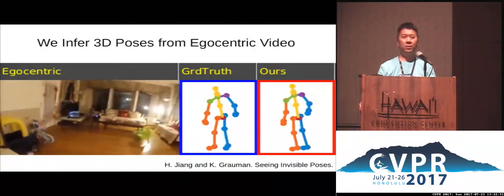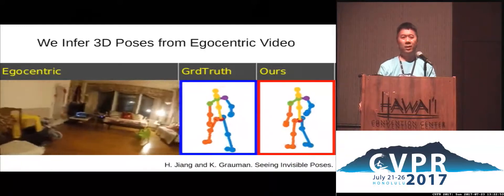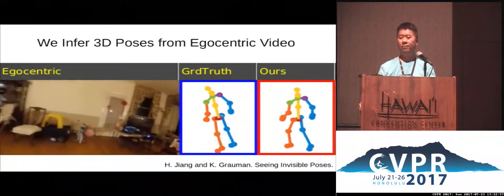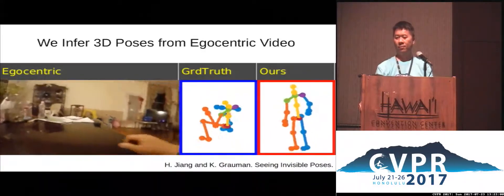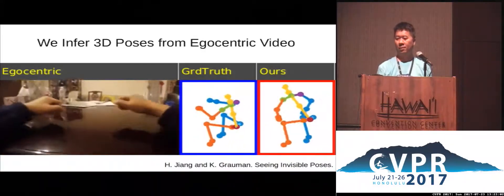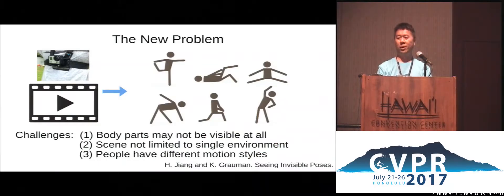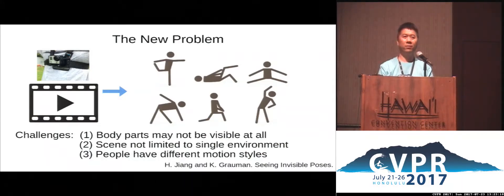Our method not only gives the pose classes, but also gives the detailed movement of the person. Seeing invisible poses from an egocentric camera is a new problem, and it has a lot of challenges. For example, we cannot see the body parts at all, the scene is not limited to a fixed environment, and people often have very different motion styles. To solve this problem, we need some kind of new schemes.